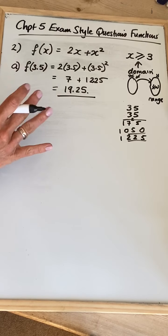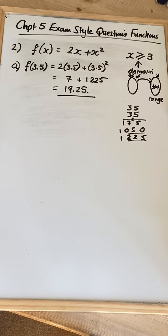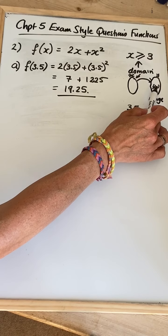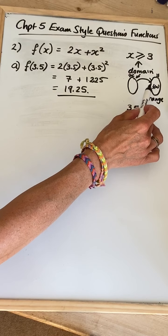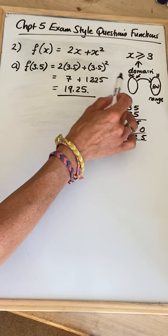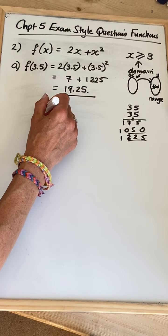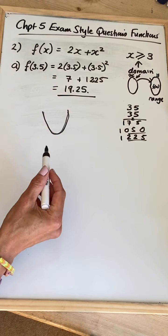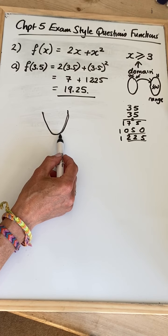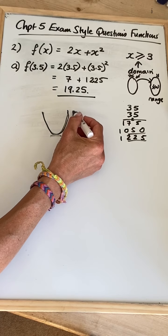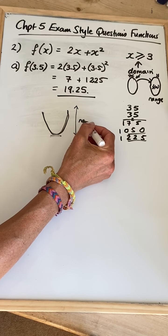So that's the standard bit that could be in a GCSE question. The second part of the question is basically asking us about the range of the function. When you're asked for the range, you are basically looking at where does this function map across to. With this function, because it's a quadratic, you could say we're going to have a parabola-shaped function. And if we were looking at all possible values in the domain, the range would be from where it's at its minimum upwards.